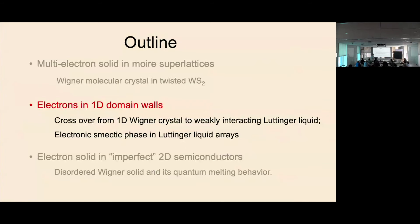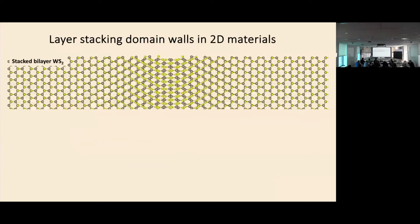Now going beyond the zero-dimensional quantum dot case, let's go to the 1D case with many electrons. If you have two 2D material layers perfectly aligned but stretch one relative to the other a little bit, from one side the atoms may be aligned, and then after some distance the lattice is shifted by one atom. Because the material prefers AB or BA stacking, it will reconstruct and push all the strain into a narrow region, forming a domain wall.